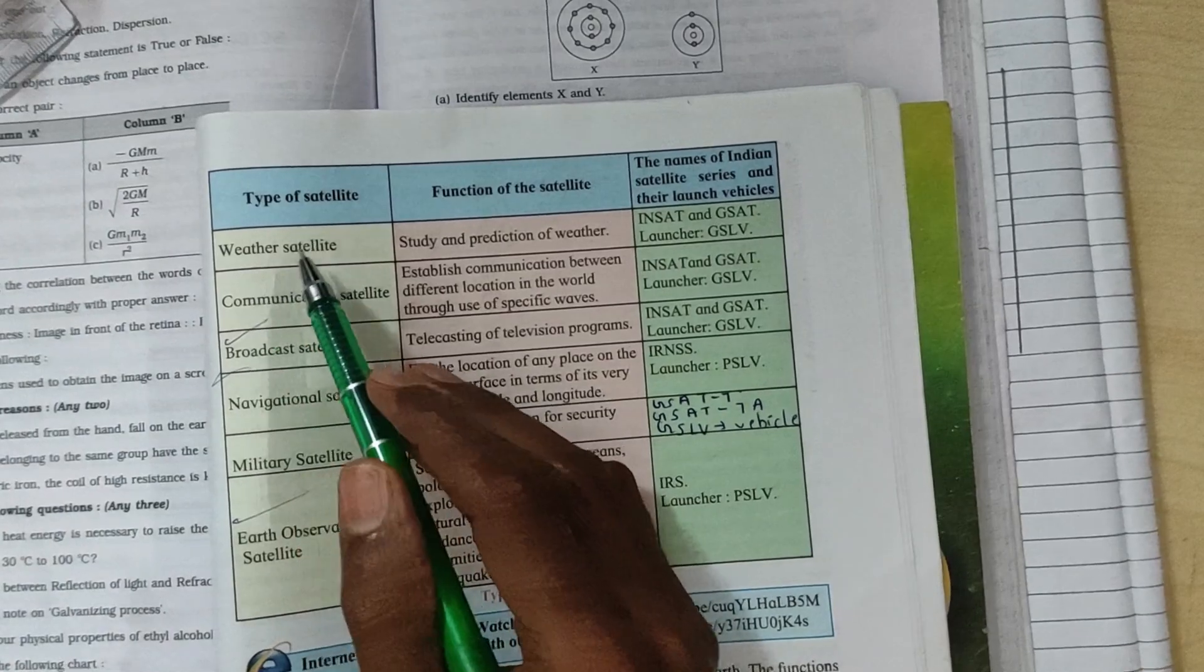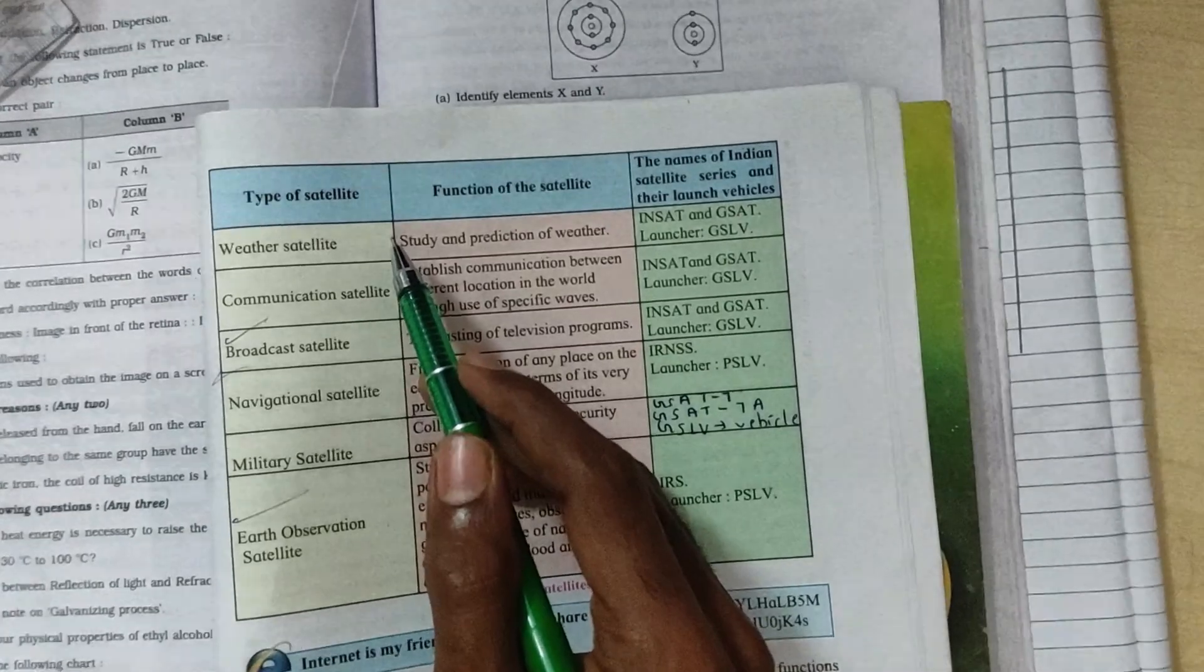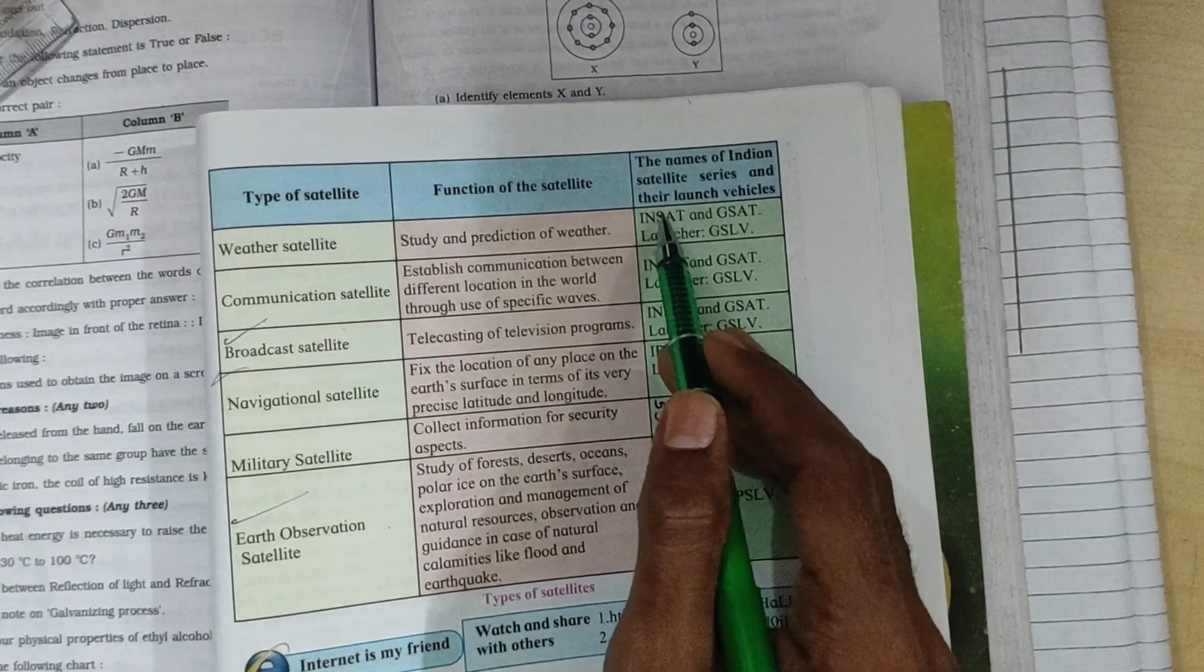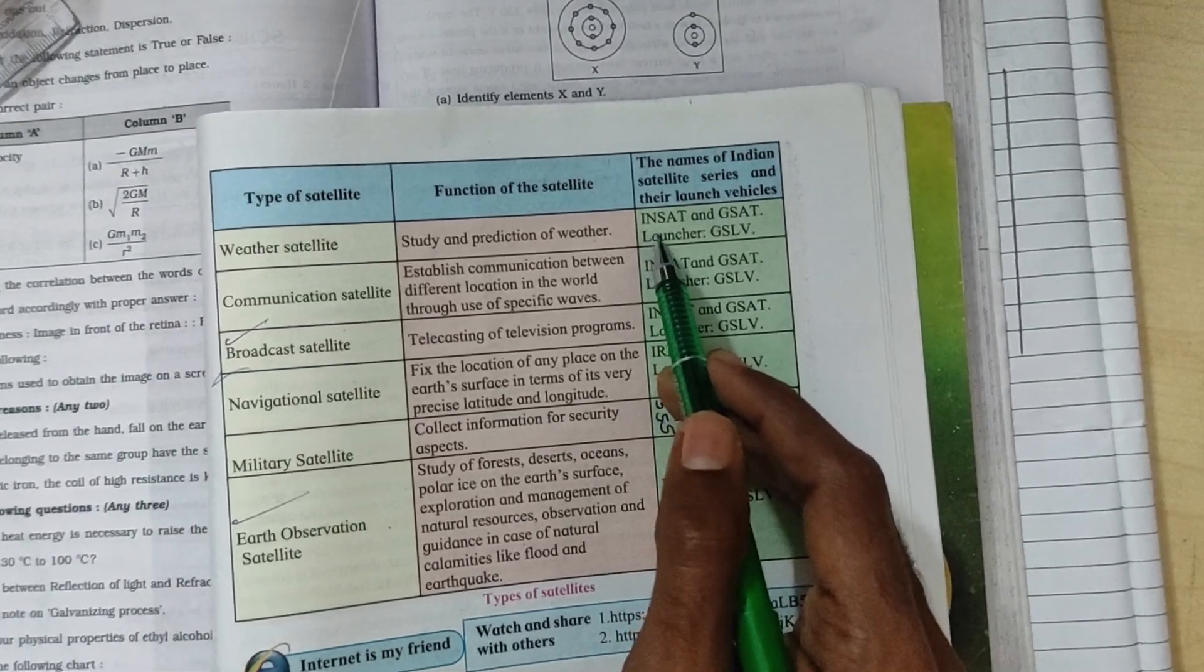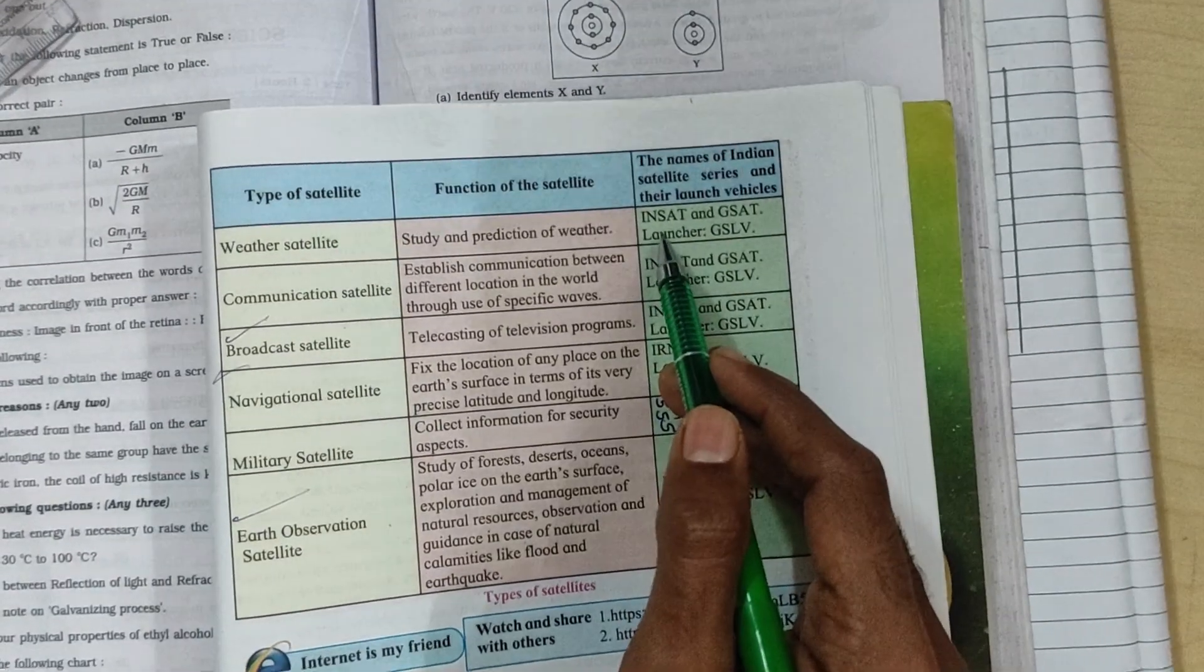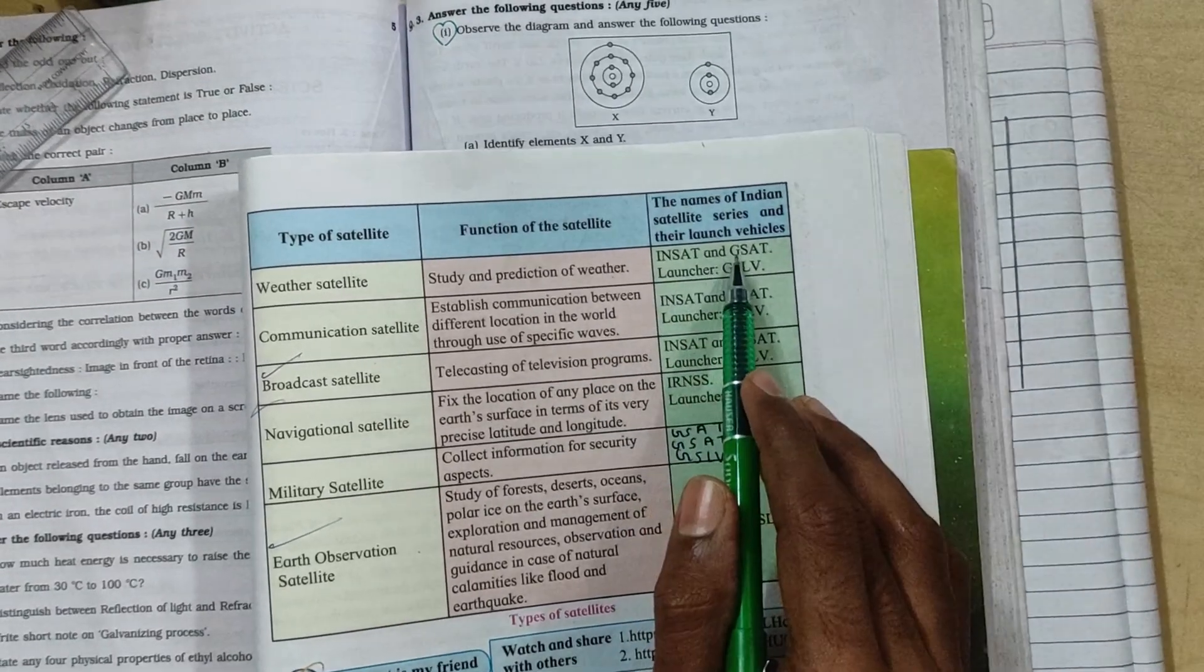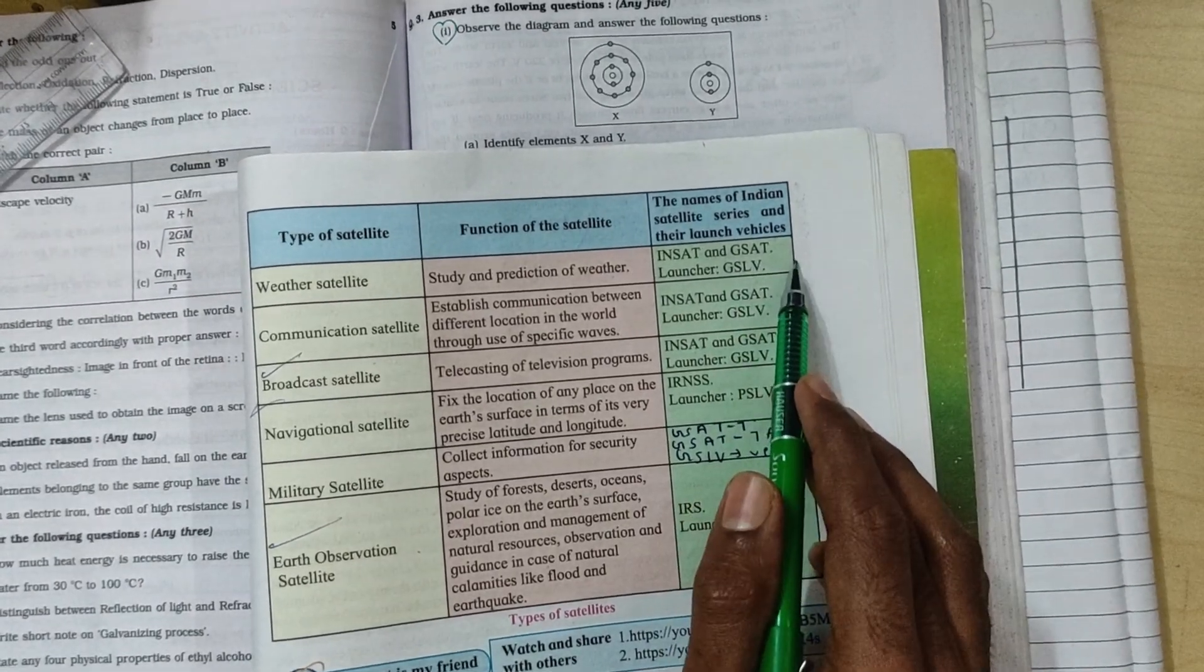Weather satellite information helps you plan your trip. INSAT and GSAT are the names of Indian satellite series and their launch vehicles. INSAT stands for Indian National Artificial Satellite, and GSAT is Indian National Satellite and Geosynchronous Satellite.